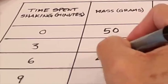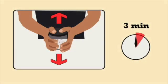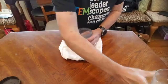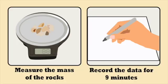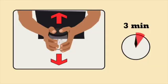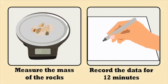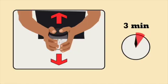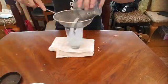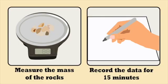If there's no change in mass, just write zero for the difference. Continue to follow the same procedure — shaking the rocks for three minutes, then recording the mass and the difference in mass — doing this for nine minutes, for 12 minutes, and for 15 minutes.